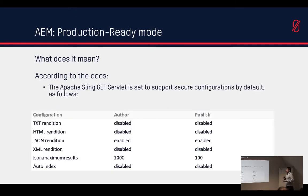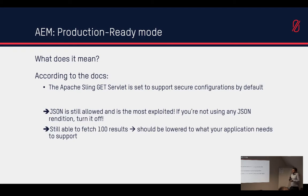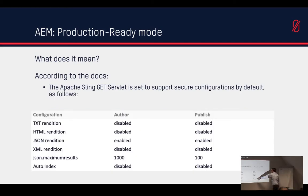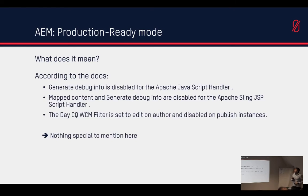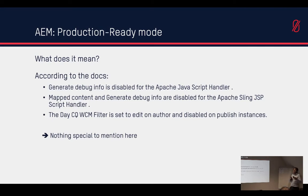Another topic is the Apache Sling GET servlet. The JSON rendition is still enabled by default, and it's the one that's been exploited the most — for example, for content grabbing. It still allows up to 100 different maximum results. If you're not using the JSON rendition, just turn it off. The debug generation info is disabled, mapped content is not using generated debug info, and the Day CQ WCM filter is set to edit mode on author and disabled on publish — that's good and should be there by default.